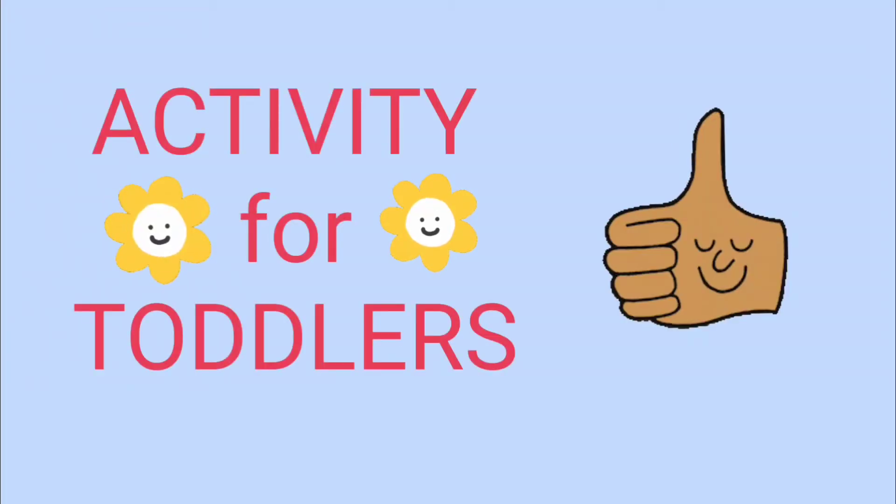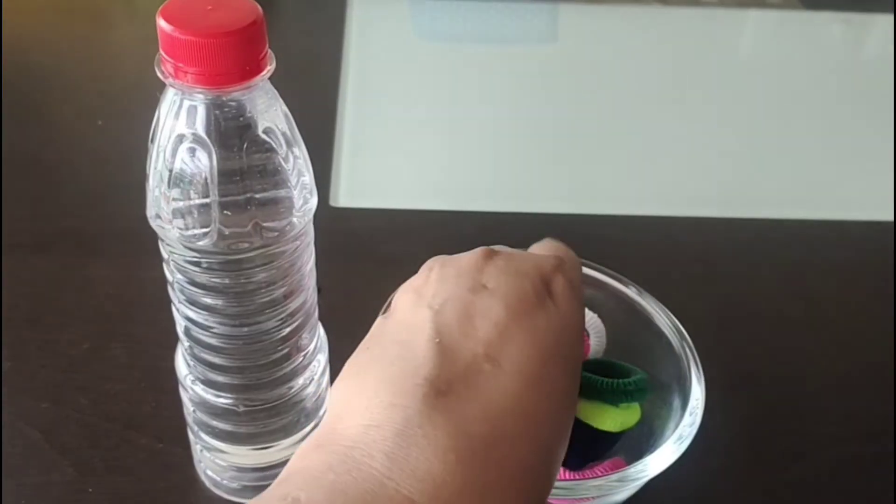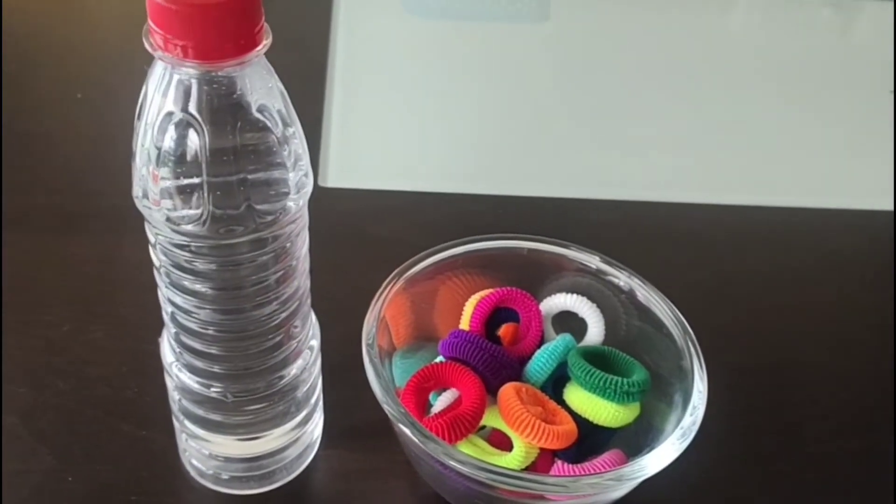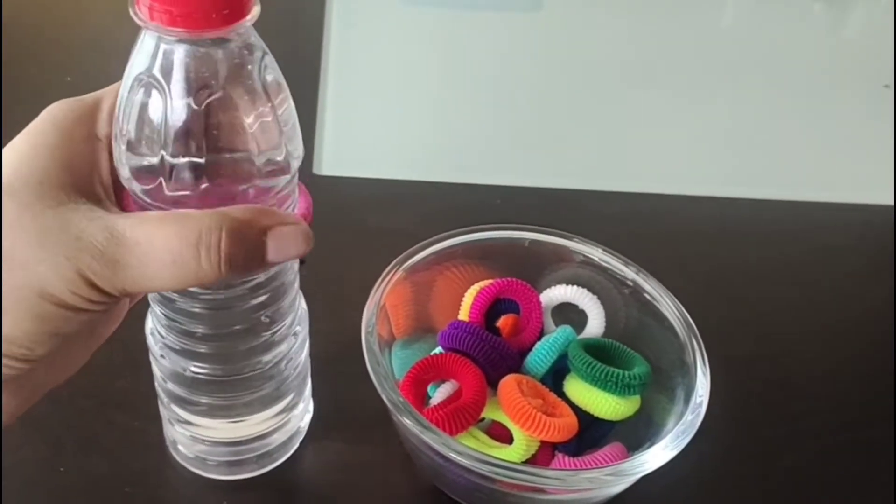The next two games are finger gym activities for toddlers. For the first one, take some elastic bands in a bowl and take a thin bottle or jar. Ask the child to stretch the bands and put them on the jar. Happy finger gymming!